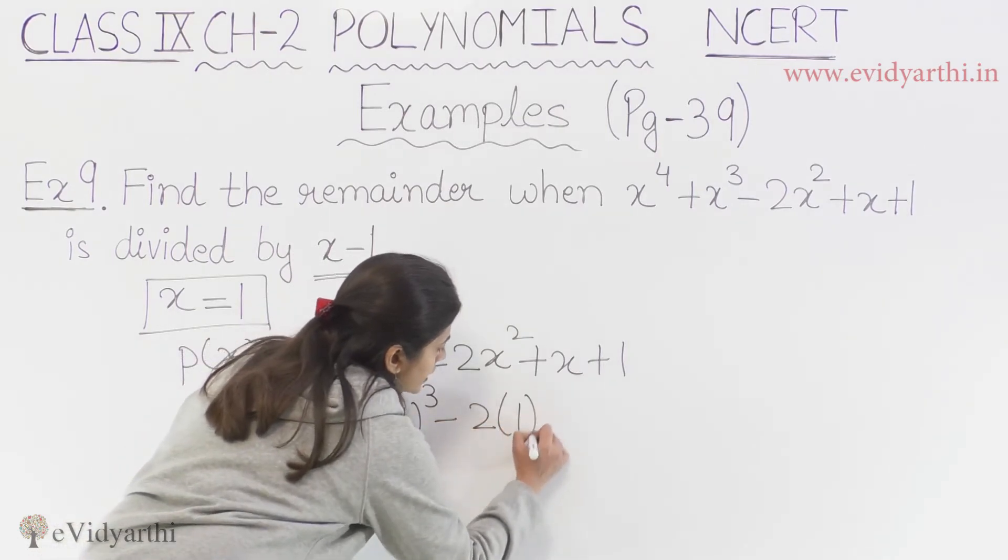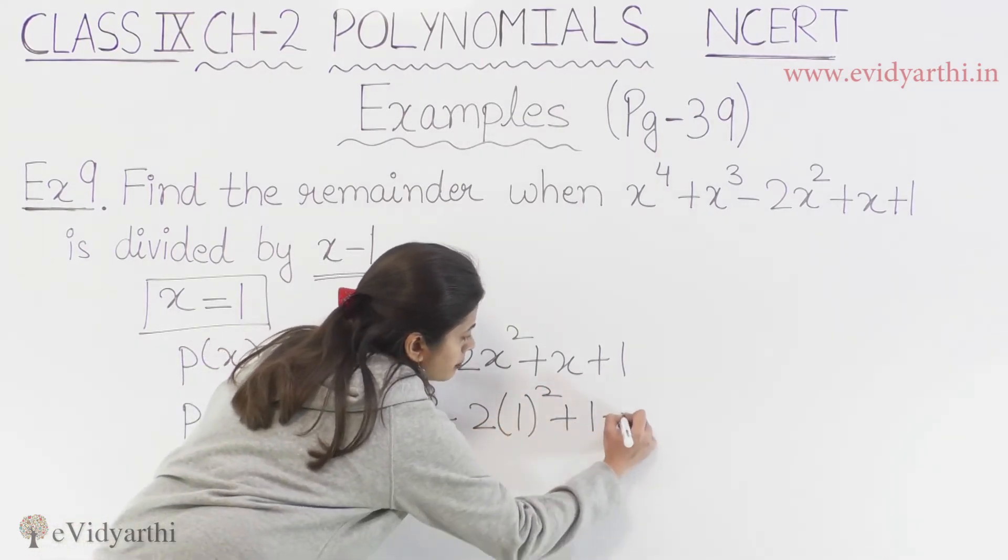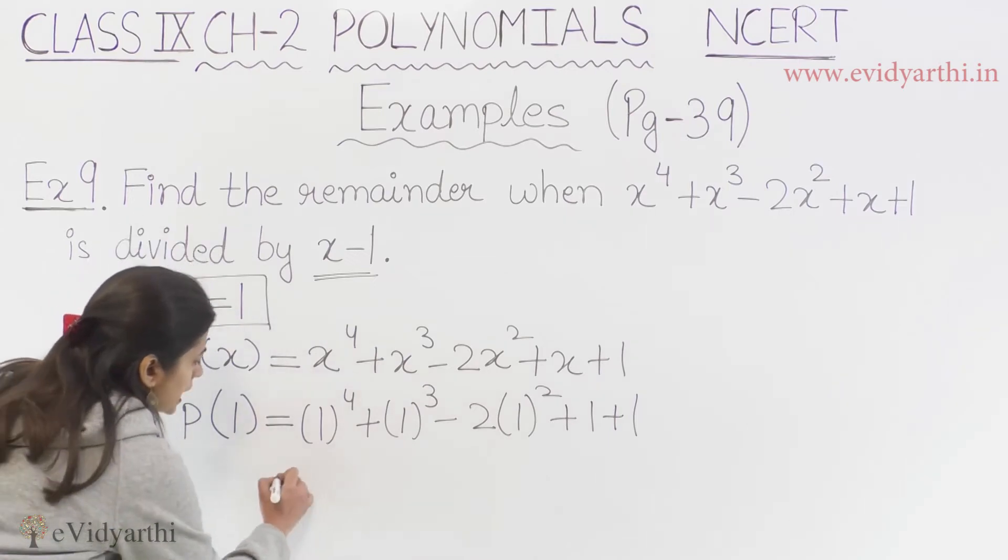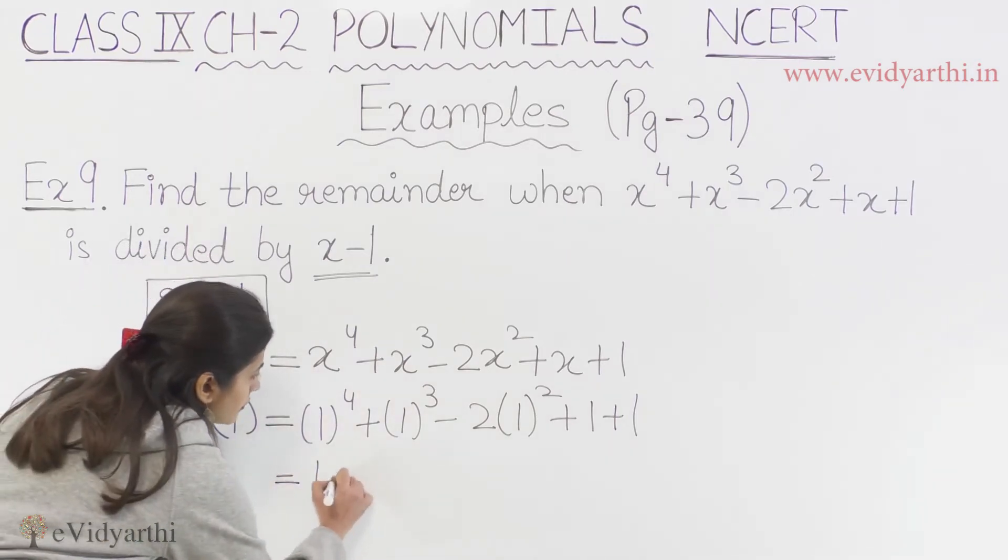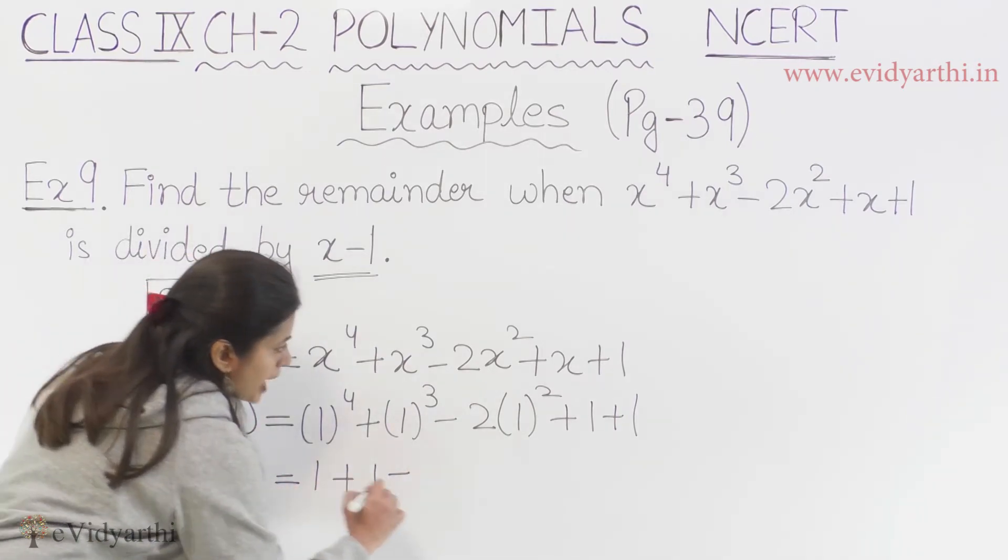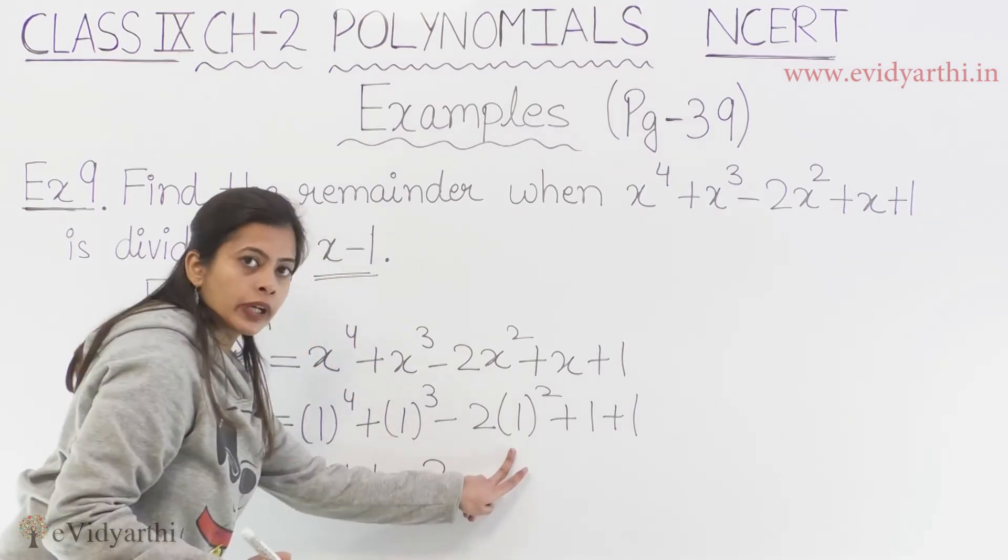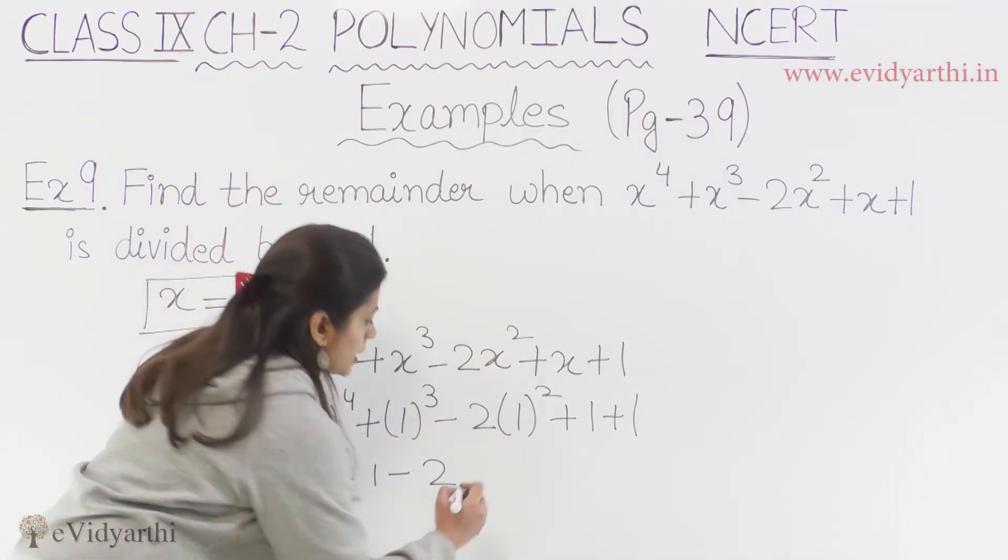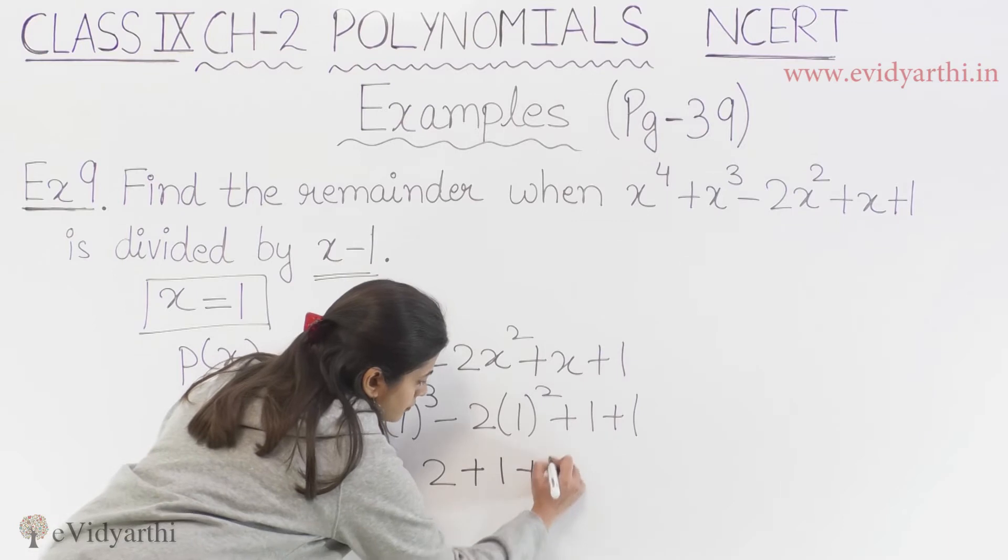We have 1 to the power 4 plus 1 to the power 3 minus 2 into 1 squared plus 1 plus 1. So if we calculate here, we have 1 plus 1 minus 2 plus 1 plus 1.